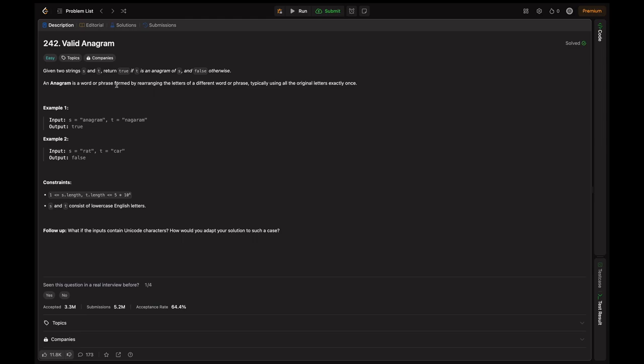So what's an anagram? An anagram is a word or phrase formed by rearranging the letters of a different word or phrase, typically using all original letters exactly once. Let's go with example two, this is simple here.